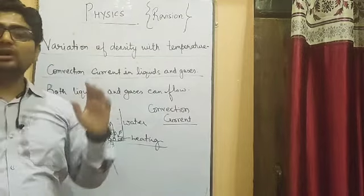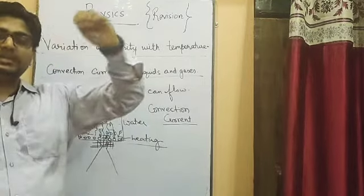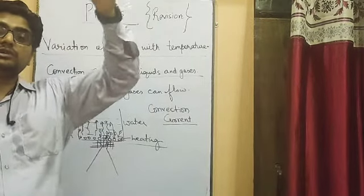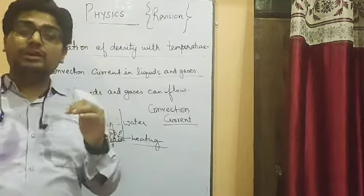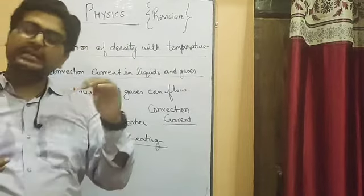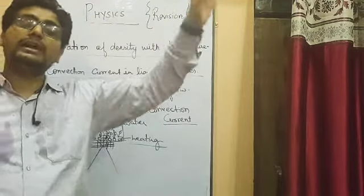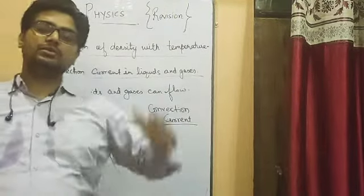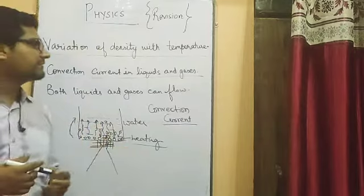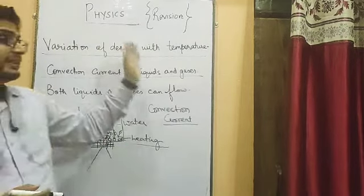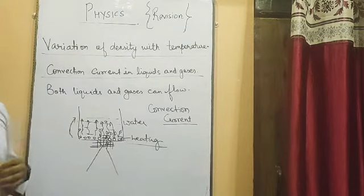Air conditioners are placed at a height near the top of the room because of convection. The air conditioner removes heat energy and releases cold air. Cold air is denser and heavier, so it comes down into the room. The hot air, being lighter, rises up and is utilized by the air conditioner and expelled outside. This is why air conditioners are placed at the top — it is all due to convection current and the variation of density with temperature.